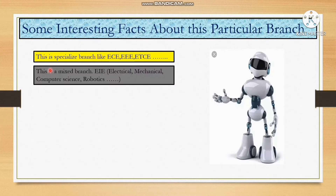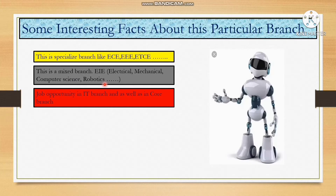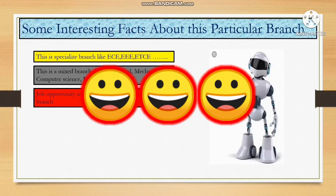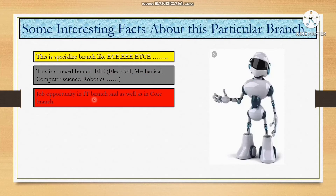The second fact: EIE is a mixed branch — electrical, mechanical, computer science, robotics, and more are all part of it. The third interesting fact is that EIE offers job opportunities in both IT sector and core sector. Because this branch relates to computer science as well as core branches like mechanical and electrical, companies from both sectors will consider you for placement.